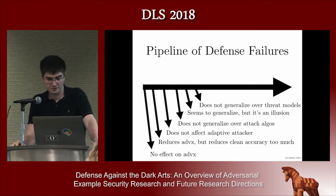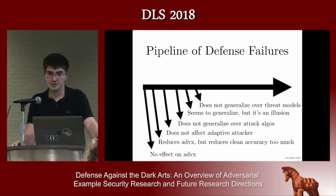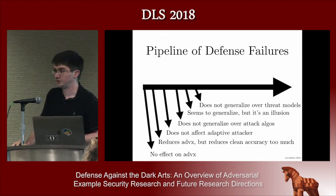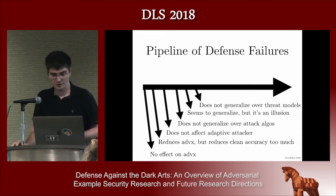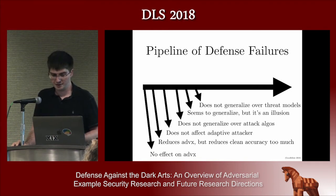If you get to the stage where you can handle an adaptive attacker, it often turns out your defense is overfit to a really specific attack algorithm — maybe you resist gradient ascent on the probability of the target class, but if people add noise before running gradient ascent, they can break your model. Finally, you might achieve good performance for a lot of different attack algorithms within your threat model, but we then find out the good performance was an illusion — something was wrong with our benchmarking process, such as using gradient masking to break all the optimization algorithms. When someone comes up with a new attack algorithm, we find we haven't actually provided security within the specified threat model.